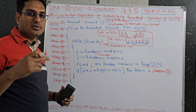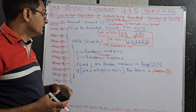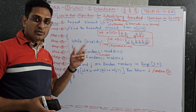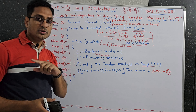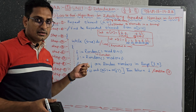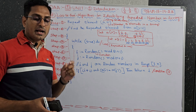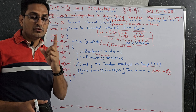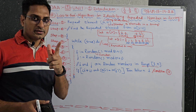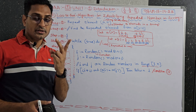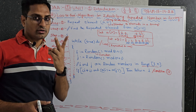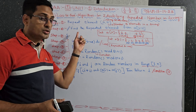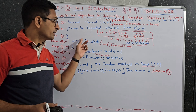Hi everybody, I am Yer Prasad. This is the topic of the following video, continuing from my previous video: Randomized Algorithm. Randomized Algorithm is classified into two types — one is Las Vegas Algorithm and the second is Monte Carlo Algorithm. Out of that, Las Vegas Algorithm is very very important.